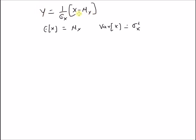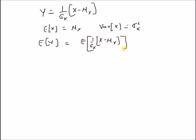Our goal is to find the mean and variance of this random variable y. The expectation of y equals the expectation of (1/σx) × (x − μx), which equals (1/σx) times the expectation of (x − μx). Since expectation of x equals μx, this is equal to 0. Therefore, the expectation of y is 0.